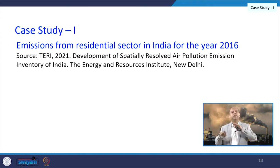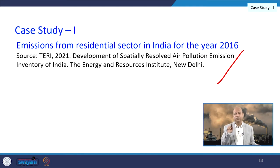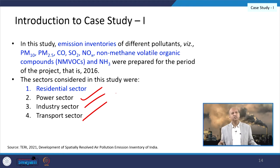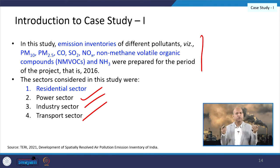For the first case study we focus on an India-level study—a TERI report titled 'Development of a Spatially Resolved Air Pollution Emission Inventory of India,' published in 2021. We focus only on the residential sector from this report, which covers all sectors. The residential sector, power sector, industry sector, and transport sector are all there. The pollutants considered include PM10, PM2.5, carbon monoxide, sulphur dioxide, nitrogen dioxide or oxides of nitrogen, non-methane volatile organic compounds (NMVOC), and ammonia. The computation was done for the year 2016.